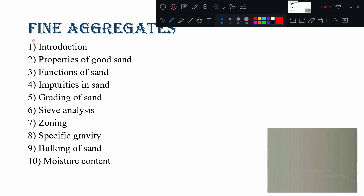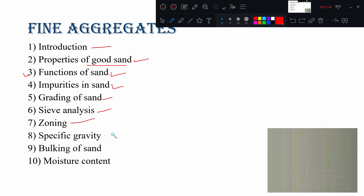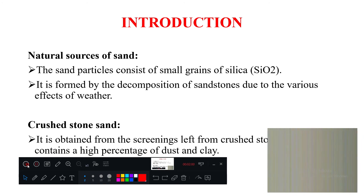In the fine aggregate topic, we are going to discuss the introduction. Very important points are: properties — what are the good properties of sand; functions of sand in concrete or mortar; impurities; grading of sand; sieve analysis; zoning; specific gravity; bulking; and moisture content. These are the tests and concepts we are going to see.